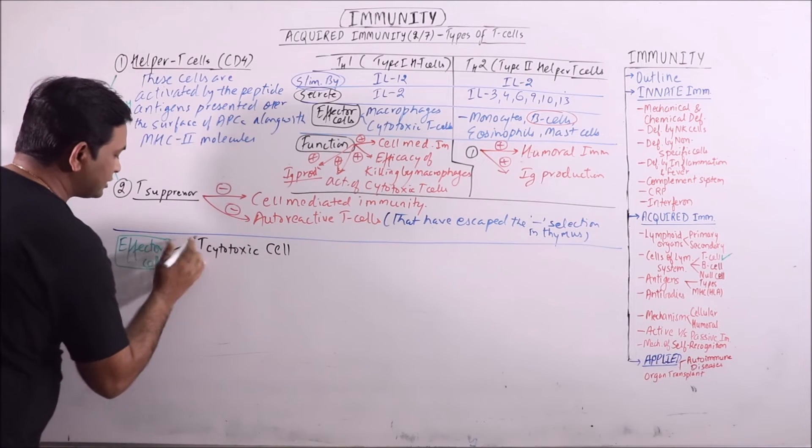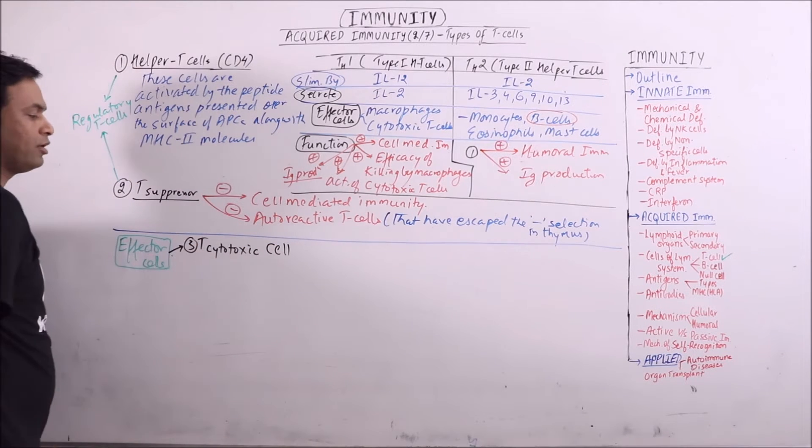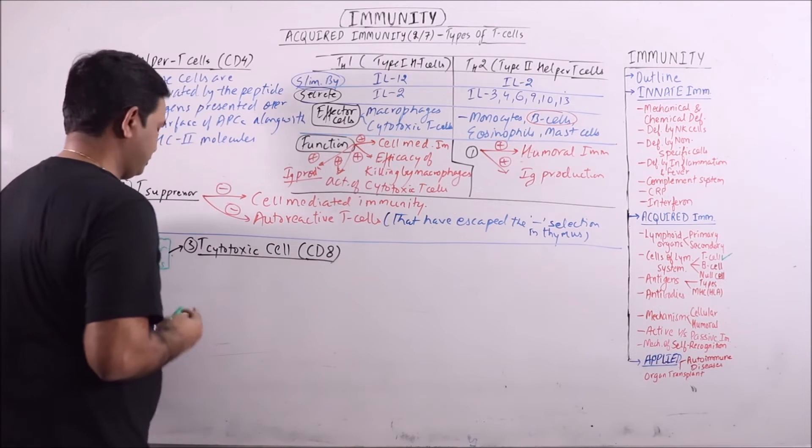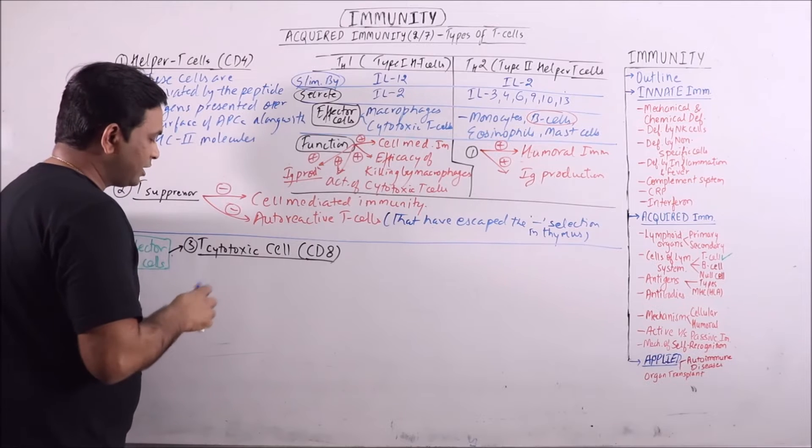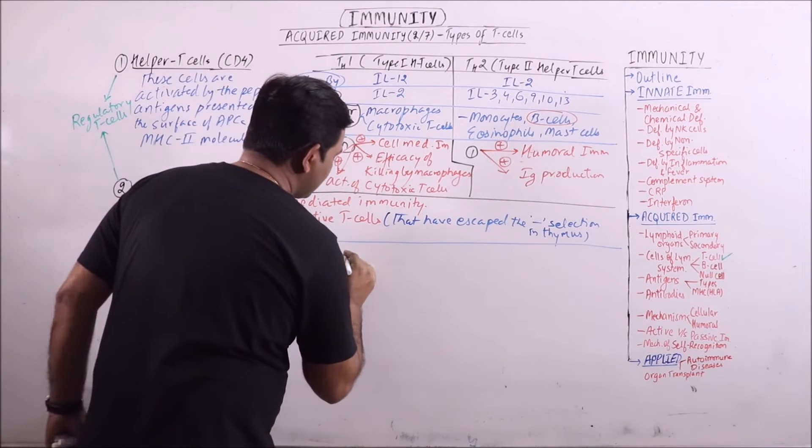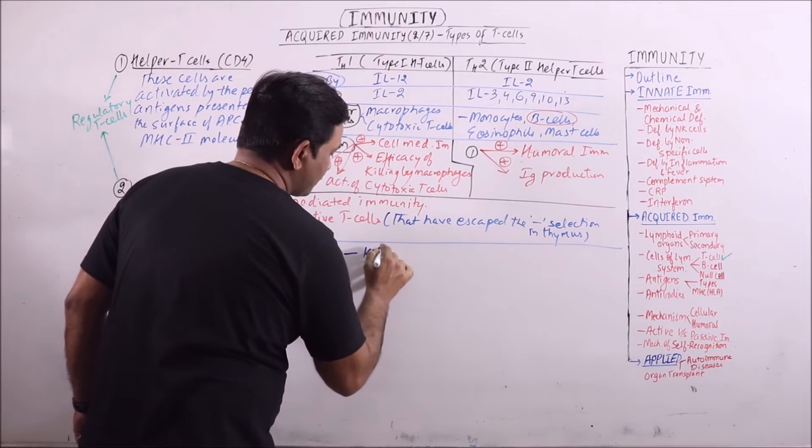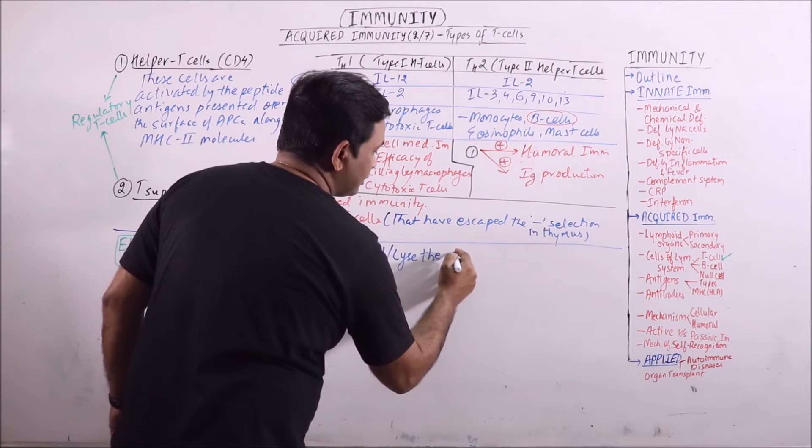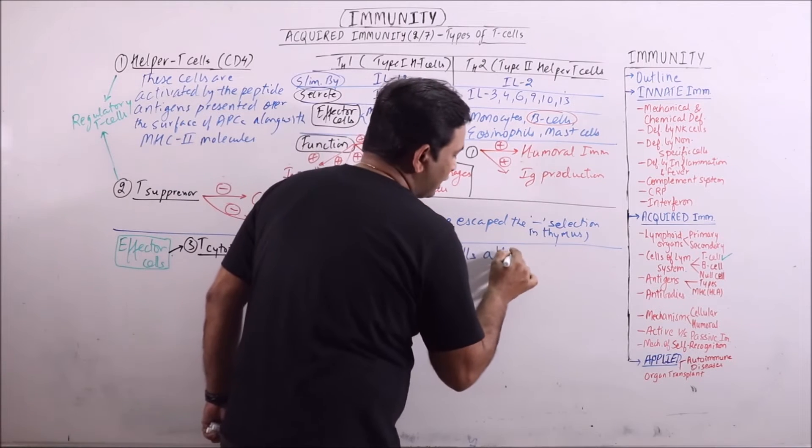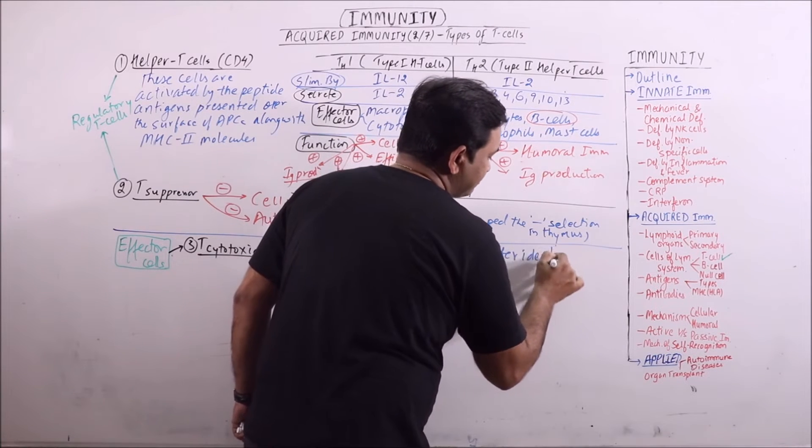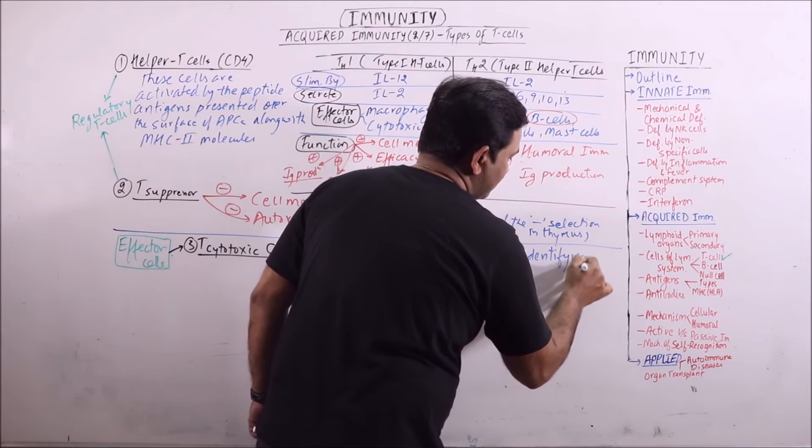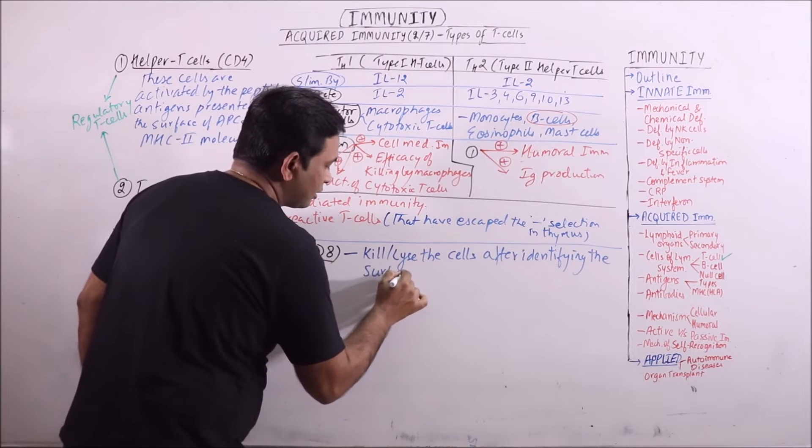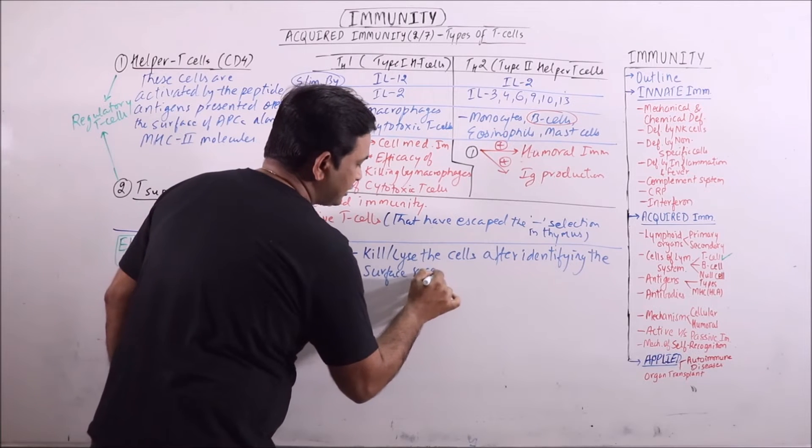T-cytotoxic cells, these are also known as scalar T-cells. These are the third type of T-cells, also known as CD8 cells. What is the main function? These kill or lyse the cells after identifying them or identifying the surface receptors.